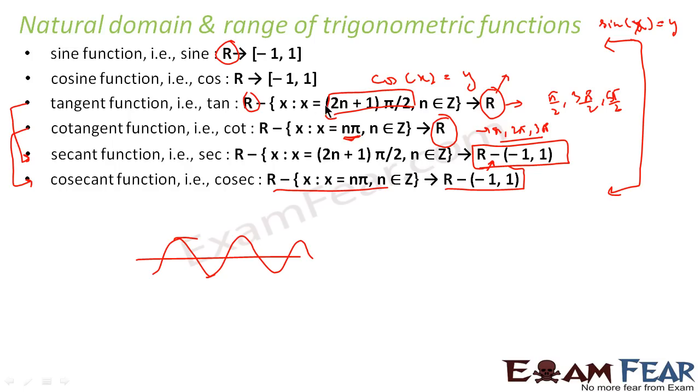For tan, it can take any values, any real number. But it won't take 2n plus 1 pi by 2 type of form. And the output can be any real number. Similarly for cot also, the output can be any real number. But it won't take n pi type of value. For sec, it is any real number minus, minus 1 to 1.